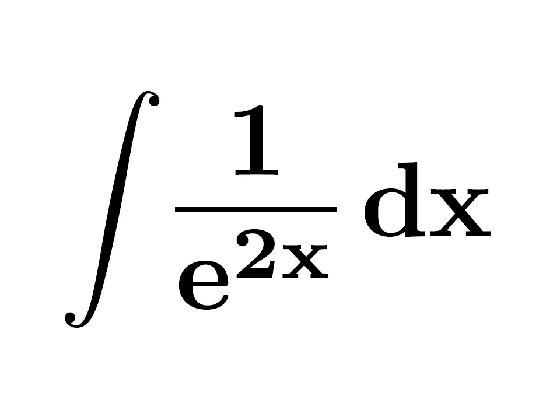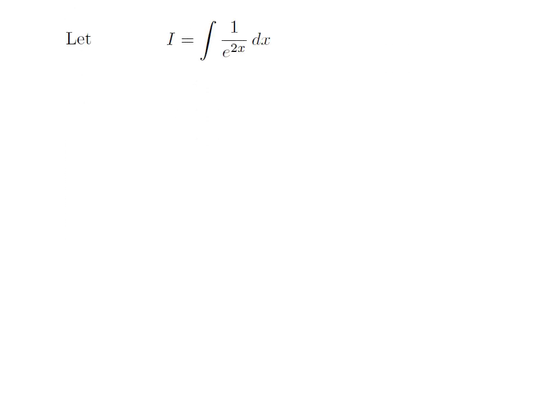In this video, we will learn to integrate 1 divided by exponential of 2x. Let i be equal to the integral of 1 divided by e to the power 2x with respect to x. I have moved e to the power 2x to the numerator, so the exponent of e becomes minus 2x. Thus, the integral i is equal to the integration of e to the power minus 2x with respect to x.